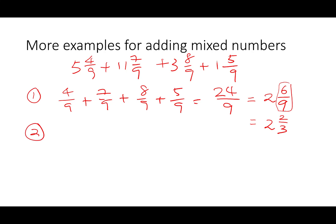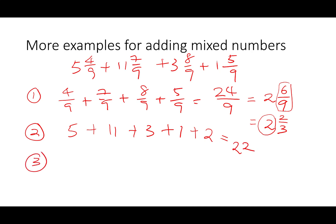The second step is to look at the whole numbers. The original whole numbers are five plus eleven plus three plus one, and not forgetting the additional two from the addition of all the fractions together. This gives us twenty-two. So the overall answer is twenty-two and two-thirds. If you have to add more mixed numbers, you do it the same way.